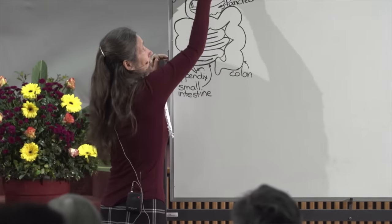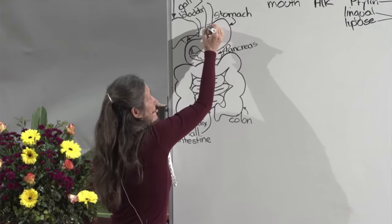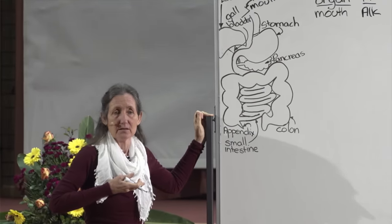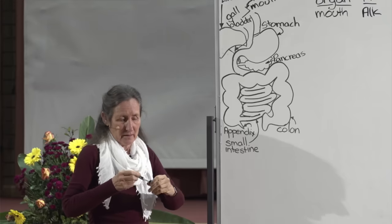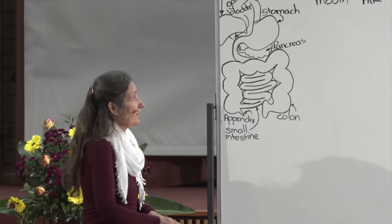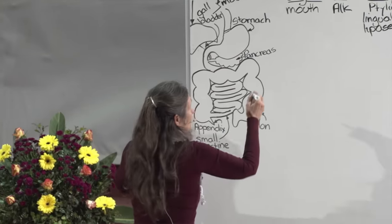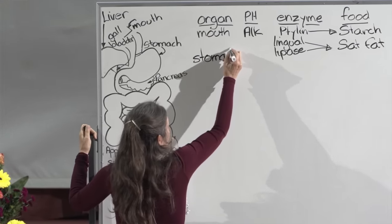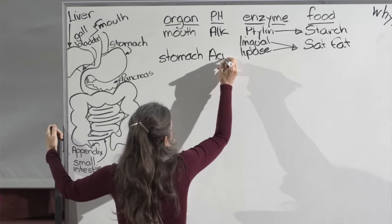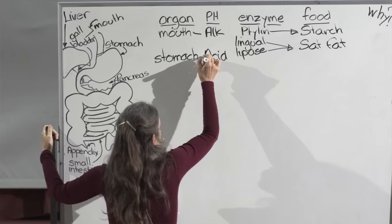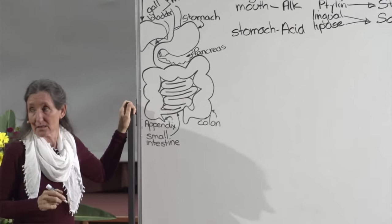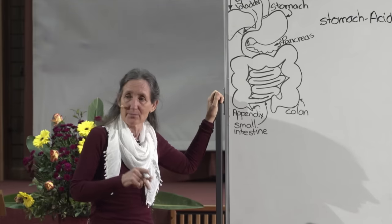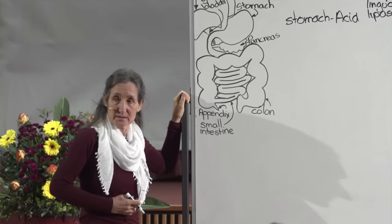Coming down the esophagus, there's a double-layered gateway called the cardiac sphincter. The cardiac sphincter opens when the muscles tighten to let food through. As we get into the stomach, we reach another stage of digestion. The stomach is an acid environment — in fact it's the only part of the body that is acid and the only part that should be acid. Tomorrow night we're going to look at the acid-alkaline balance in the body.